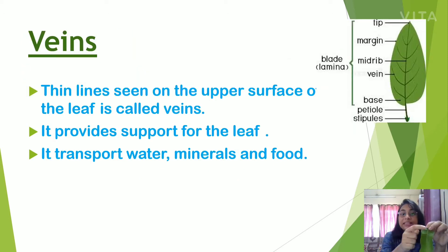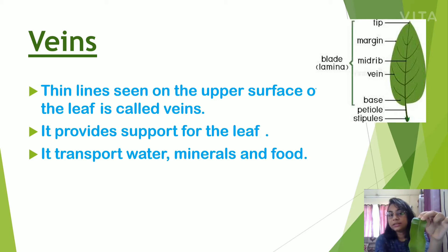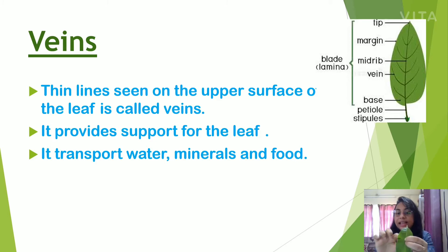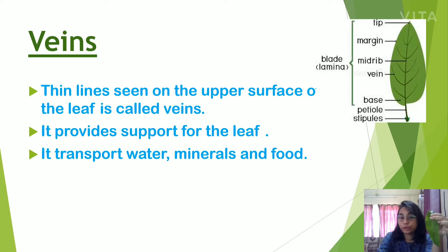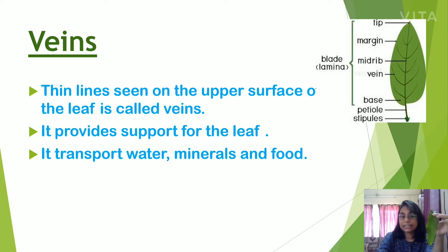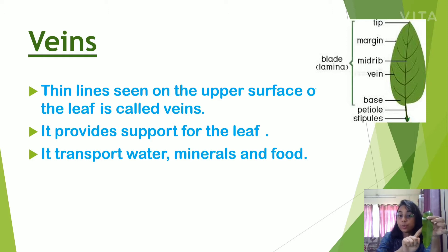The thin lines on the upper surface of the leaf are called veins. In the picture you can also see the thin lines — they are called veins. Veins provide support for the leaf to make it sturdy, and they also transport water, minerals, and food to the leaf. They act like small pipes for transportation.